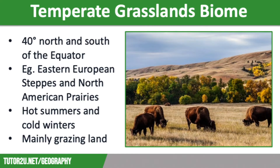Let's have a look at a different grassland biome — temperate grasslands such as the Eastern European steppes and the North American prairies. Temperate grasslands lie around 40 degrees north and south of the equator. These inland areas experience hot summers and cold winters as they don't benefit from the seasonal warming and cooling effects of the sea. This biome is dominated by short tussock and feathered grasses and the land is mainly used for grazing.